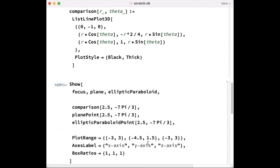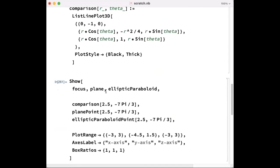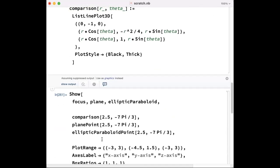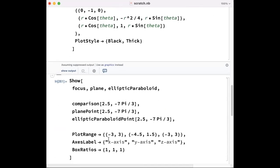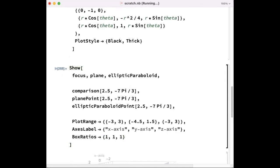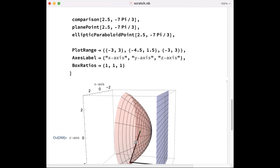Then I can show you the focus, the plane, the elliptic paraboloid, and I'll take some point. Let's take a radius 2.5 and a theta of -7.5 over 3. And let's make a reasonably sized box, six units on each side. We'll make the box ratios 1 to 1 to 1, so the units are equal, and we'll give labels to the axes.